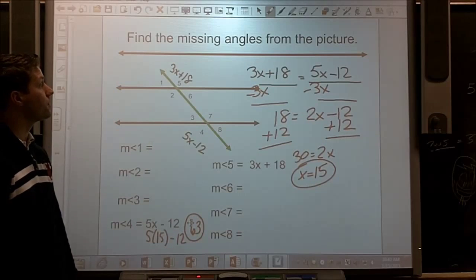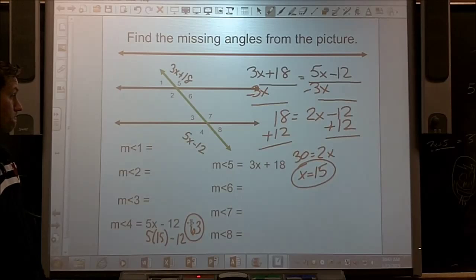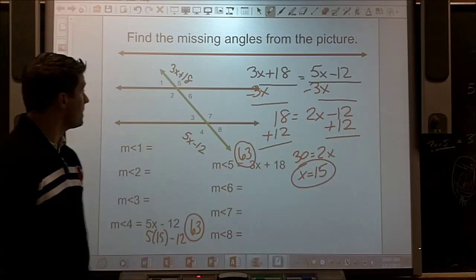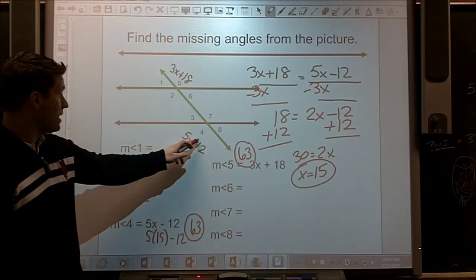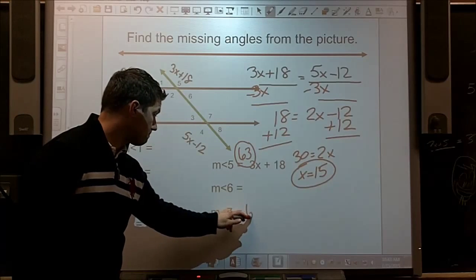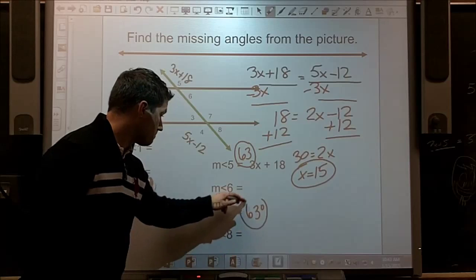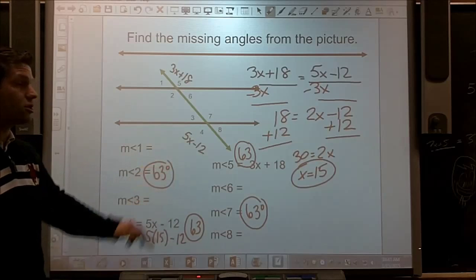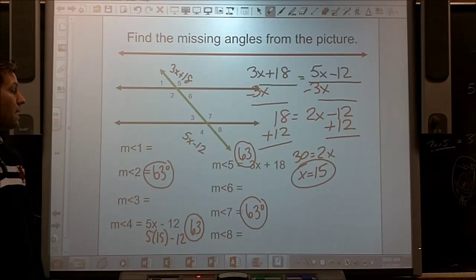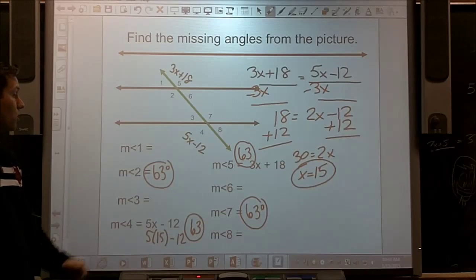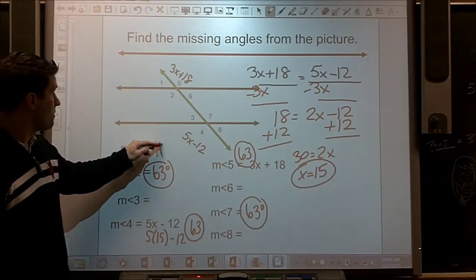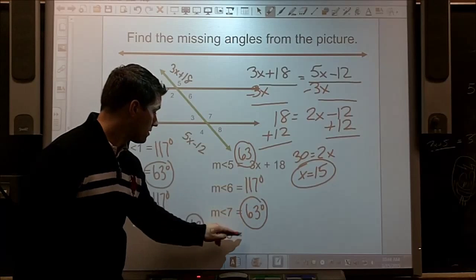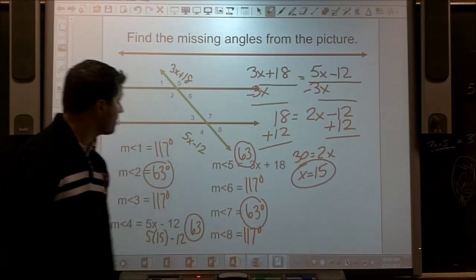So let's fill in the rest. Who else is 63? Angle 5 is. Angle 7 needs to be. And angle 2 needs to be. All those relationships. 180 minus the 63, that's going to be 117. All the others are going to be 117.